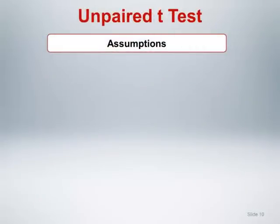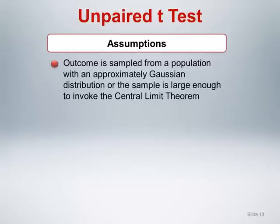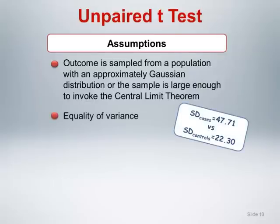When assessing any statistical results, it is essential to review the assumptions under which the results are valid. For the unpaired t-test, we have the following assumptions: the outcome is sampled from a population with an approximately Gaussian distribution, or the sample is large enough to invoke the central limit theorem. The second assumption relates to the equality of variances assumption. For the cholesterol data, we noted standard deviations of 47.71 and 22.3 for cases and controls, respectively. Recall that the variance is simply the square of the standard deviation. There is concern about the validity of this assumption for this data, and how to assess and deal with this will be discussed in the StatCrunch demo.